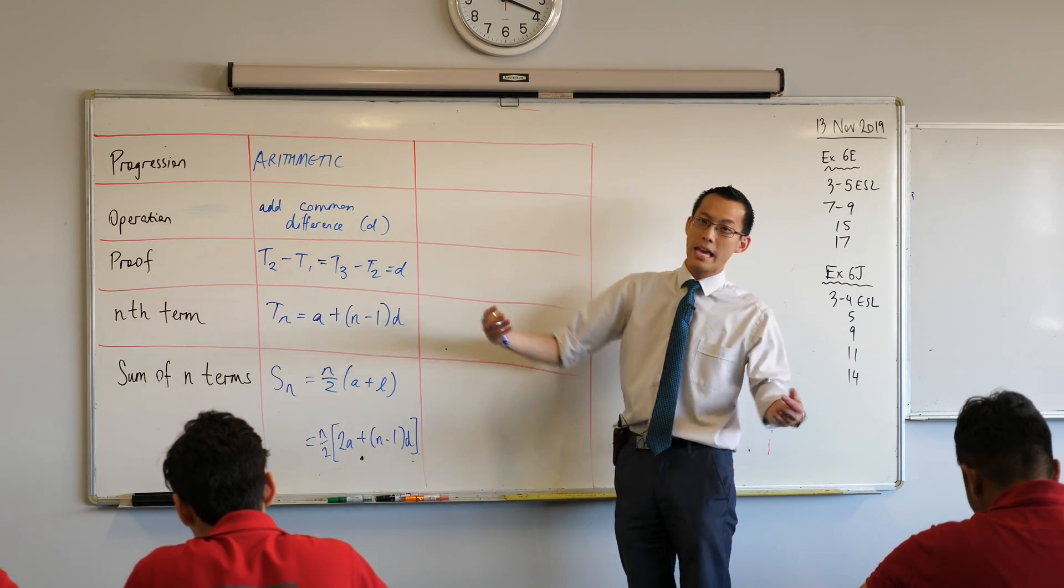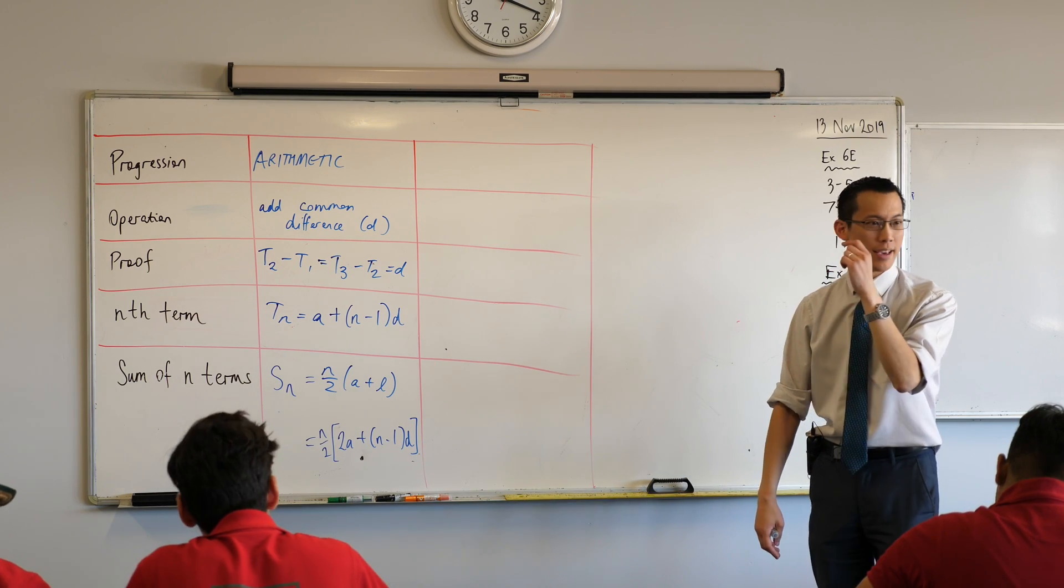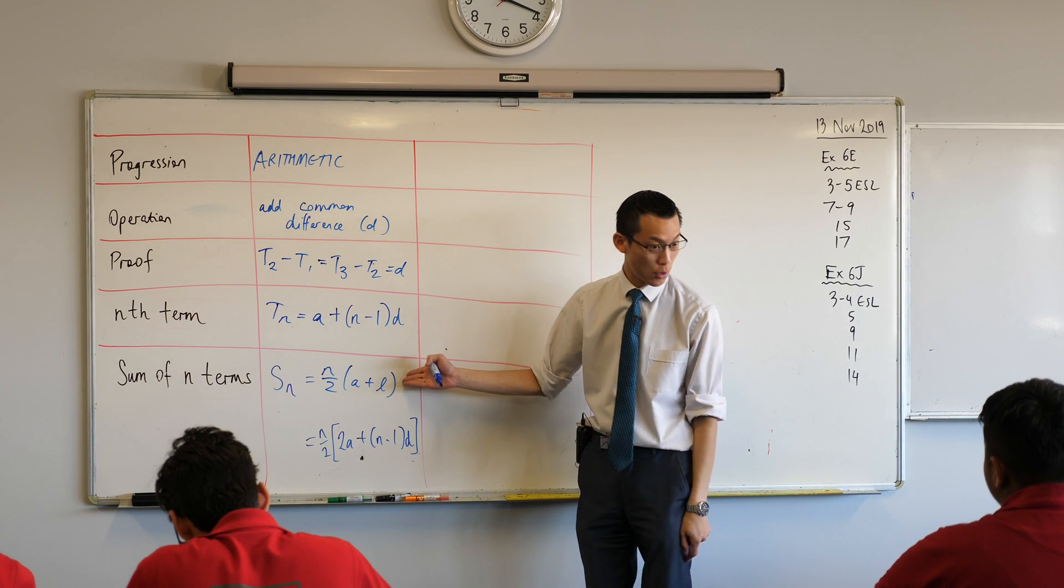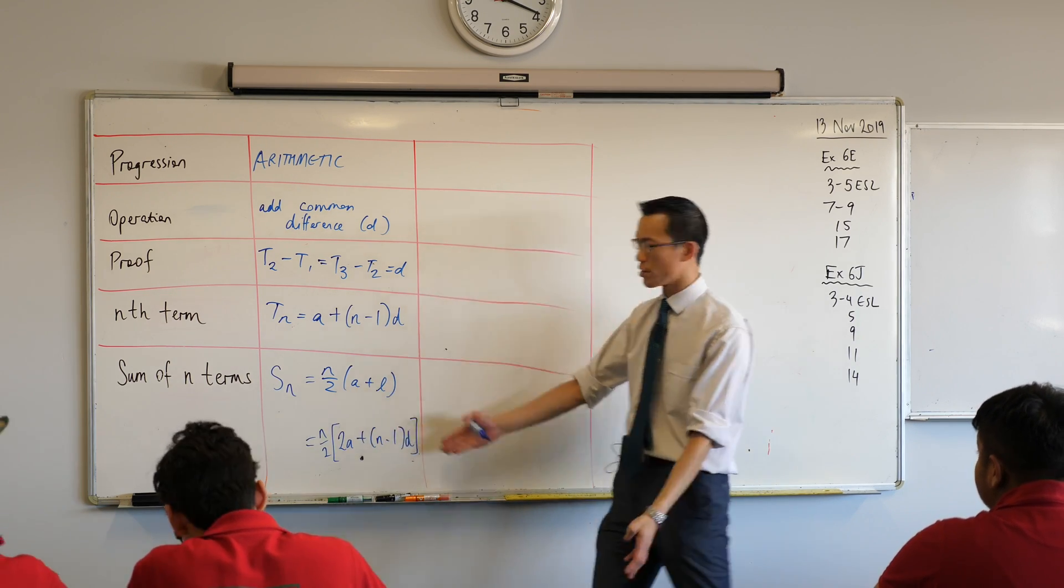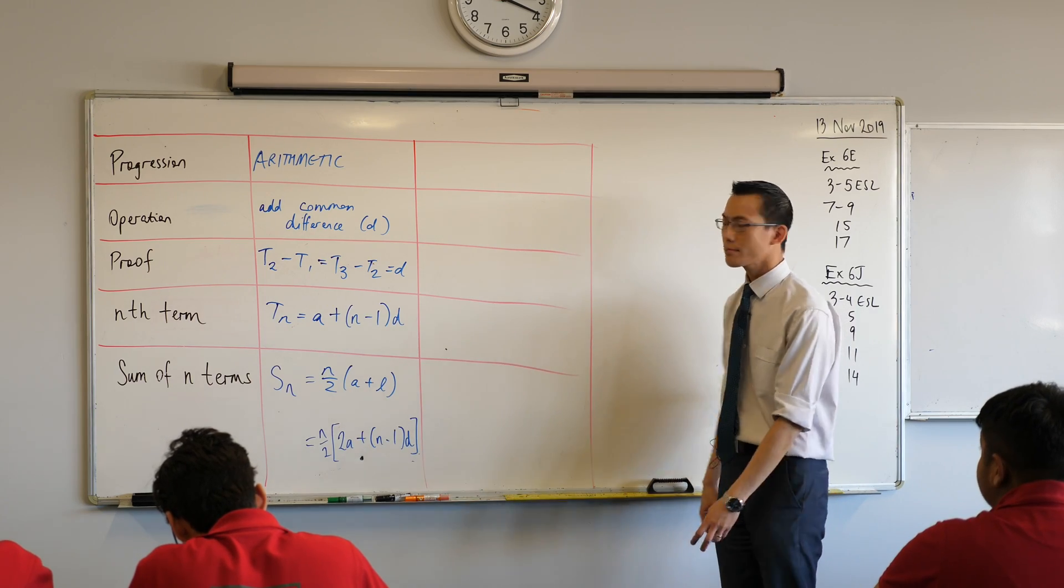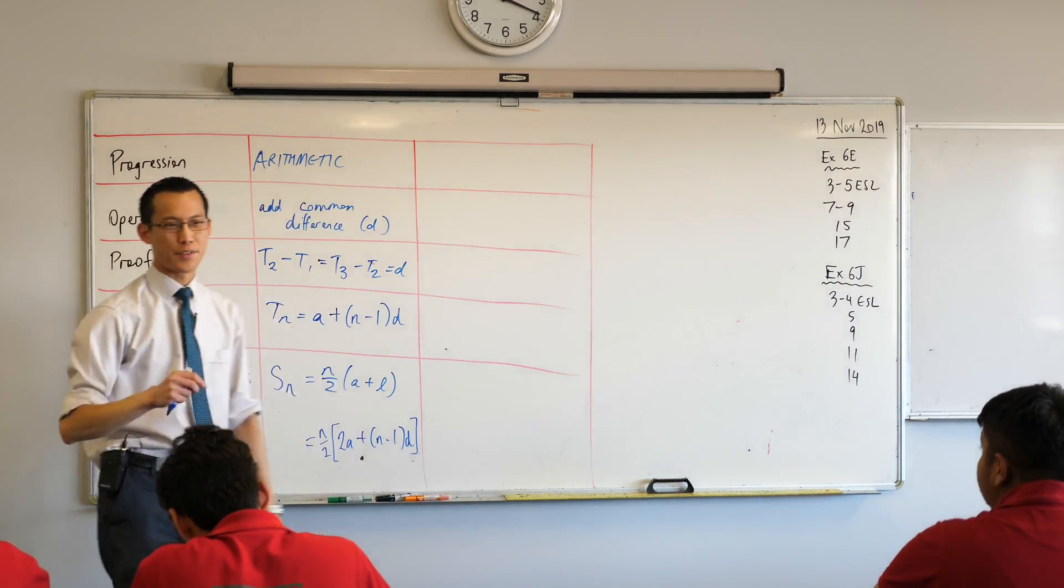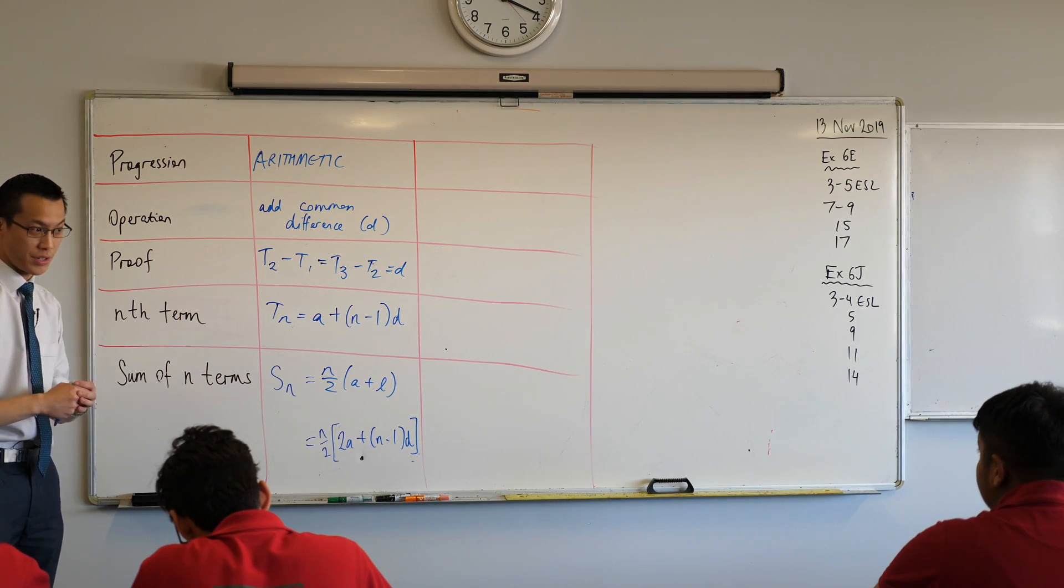So, A plus L indicating your first term and your last term, okay? Now, remember, these two are the same thing, just dressed up differently. So, we use both of them in order to be able to say, do you have the last term? Or just use this formula. If you don't know what the last term is, then use this formula, okay? You use it according to what is appropriate.